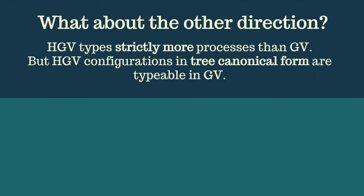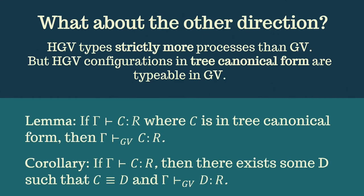The same doesn't hold in the other direction, so as we've already seen, HGV types more processes than GV. However, HGV configurations in tree-canonical form are typable in GV, and by extension, that means that every HGV configuration typable under a single typing environment is equivalent to a configuration that's typable in GV.